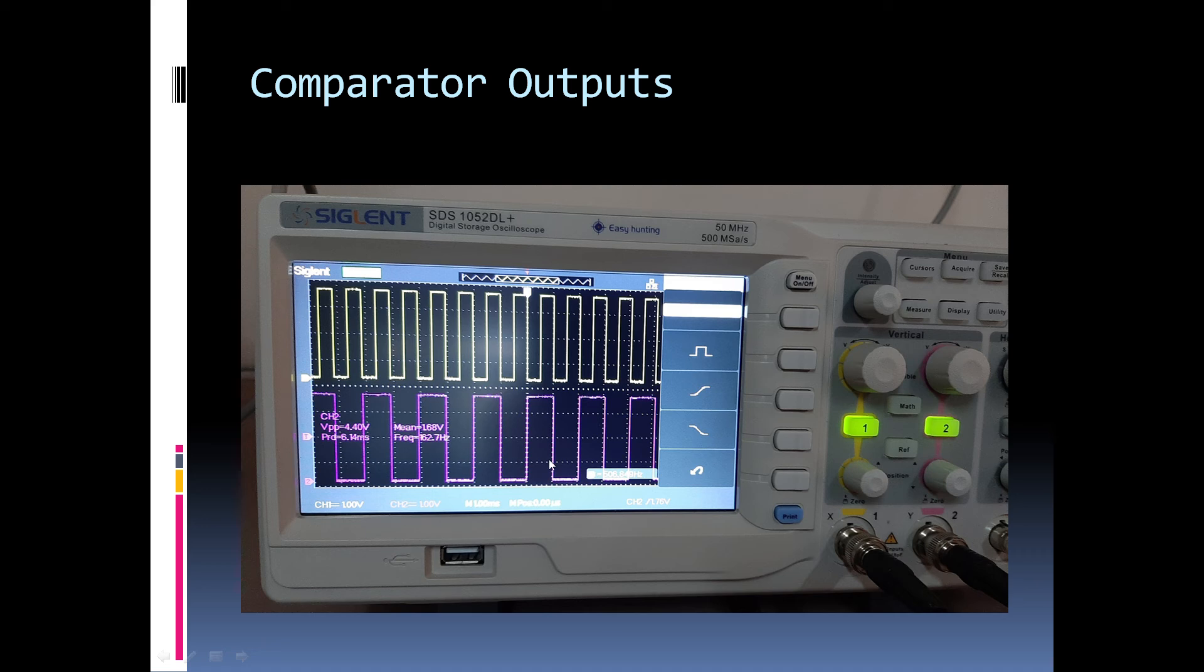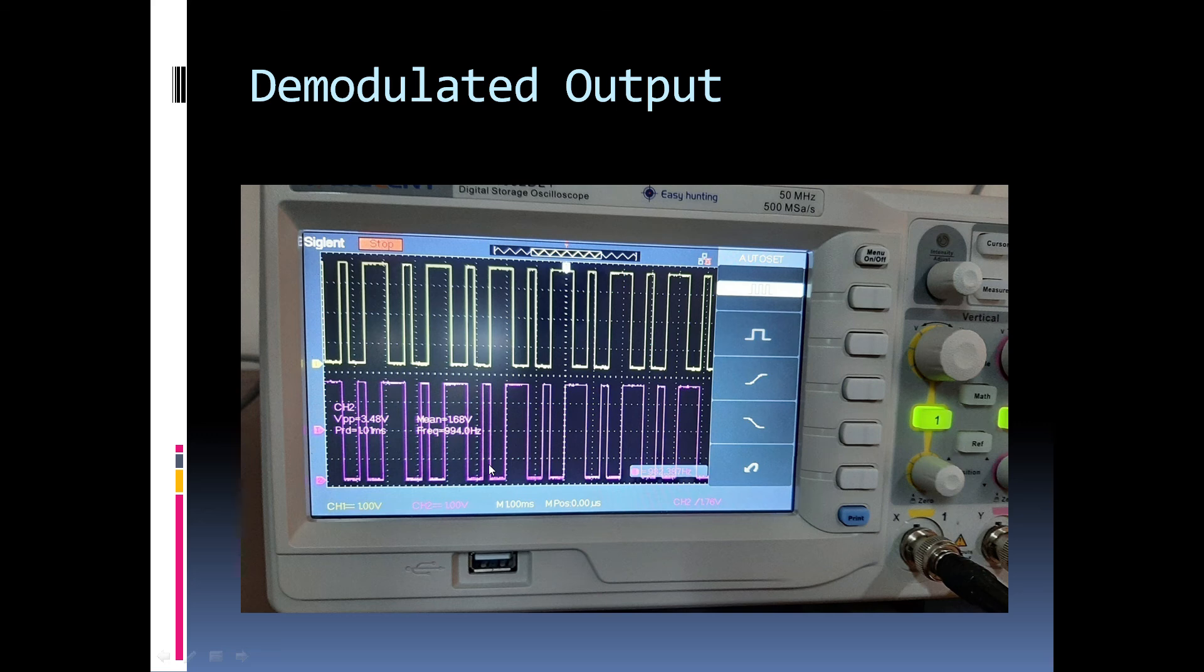And we can see the data output for I and Q channels in this slide. And here we see the demodulated output in channel 2. And for comparison purpose, the original data signal is fed to channel 1. And we can clearly see some delay in the output compared to the original data.